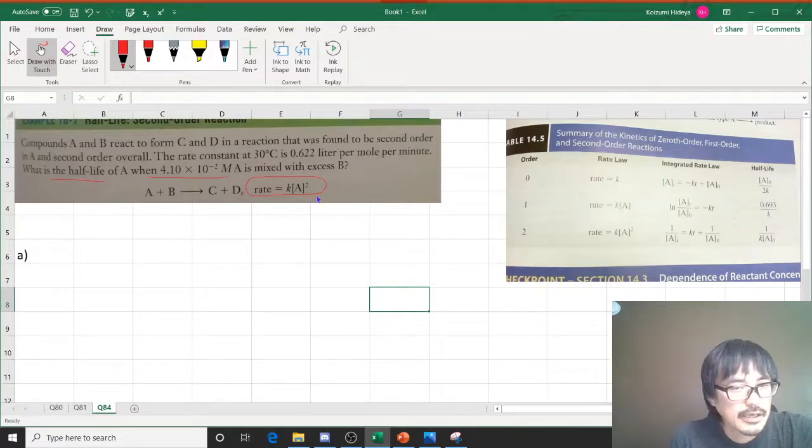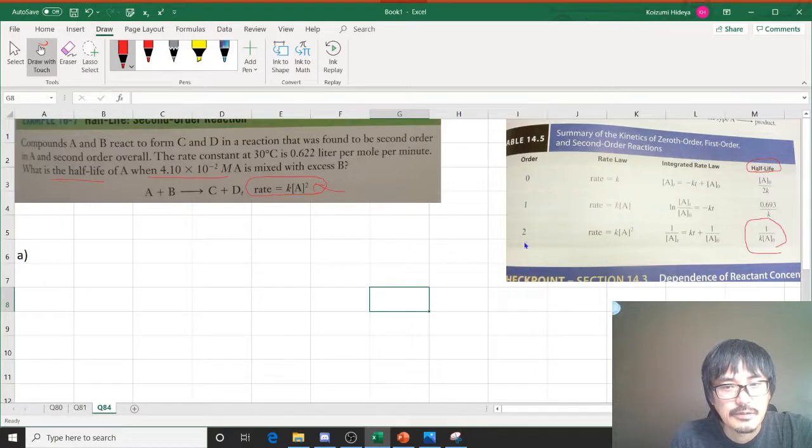So this is a second order. You can actually see it right here, it's a second order. And then you're looking for the half-life, right? So you are going to use this one because it's a second order half-life. You're going to use that formula.